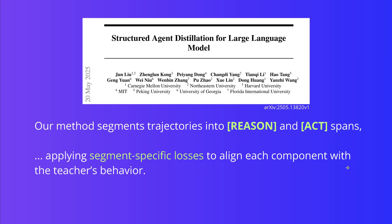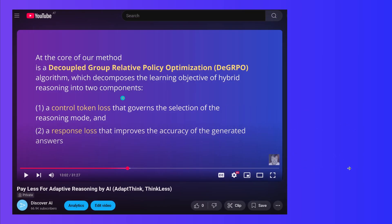It turns out that this is exactly what has been the problem up until now. What they do is segment the trajectory into the reasoning trajectory and the action trajectory, and then apply segment-specific loss functions for the training.